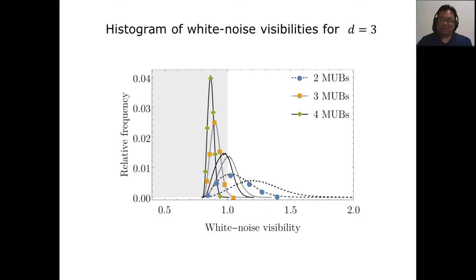So here is an example of the data that we get for qutrits. The lines without markers are for the CGLMP and the lines with markers are for the visibilities obtained from the linear program. This is a distribution of the visibilities. As you can see, if you have four MUBs, then this distribution with the green diamond looks like it's almost all in this region with visibility less than one. So this means that we have a very high probability of violation.